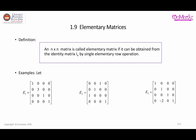Hi, assalamualaikum warahmatullahi wabarakatuh. This is a short video about elementary matrices. The definition is as follows: a square n×n matrix is called an elementary matrix if it can be obtained from the identity matrix by a single elementary row operation. So you start with an identity matrix of size n and perform just one single elementary row operation to turn it into an elementary matrix.